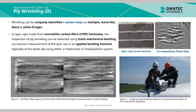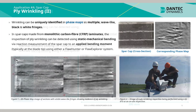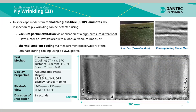Figure 1 shows a 2D phase map image of sections with visible wave-like fringes showing evidence of ply wrinkling. Figure 2 shows an image of ply wrinkling inspection being performed using a Q810 at an on-site inspection. In spar caps made from monolithic glass fibre or GFRP laminates, ply wrinkling can be detected using vacuum partial excitation via application of a high pressure differential using a floor hunter or floor explorer system with a manual vacuum hood, or alternatively via thermal ambient cooling using a floor explorer.